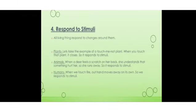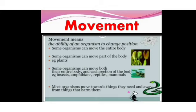Living organisms perform the process of movement. They can move from one place to another — that is also called locomotion. They move with the help of their organs like legs, or they fly with the help of their wings and feathers. Plants do not show locomotion; they may move their leaves and branches but do not change their place.